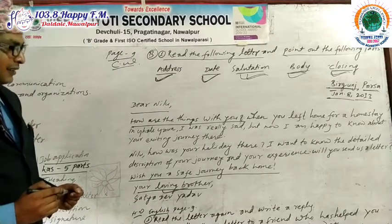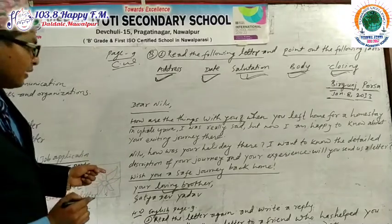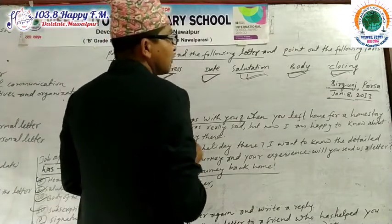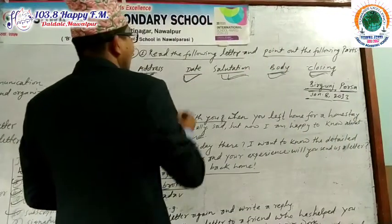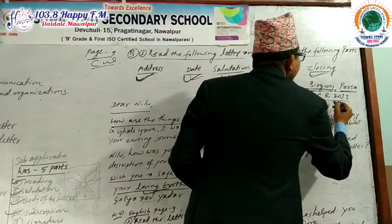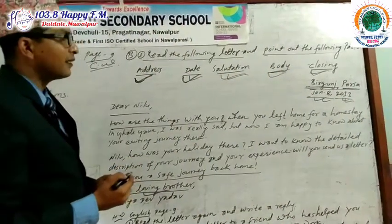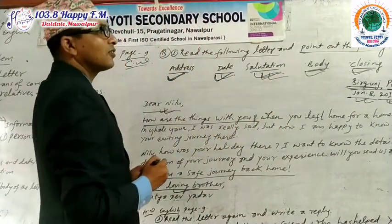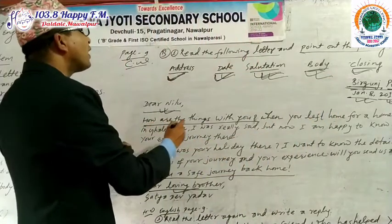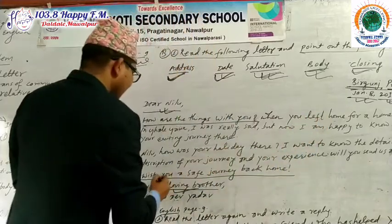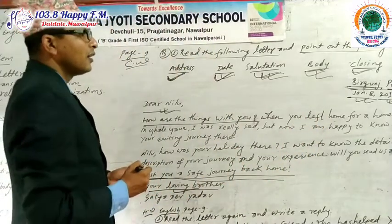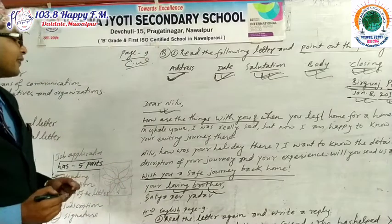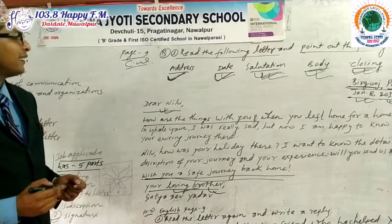What is the closing? The closing is 'Your loving brother.' Once again: the address is Brigands; the date is January 8th, 2013; the salutation is 'Dear Nilu'; the body is 'How are the things with you' through to the end of the main content; and the closing is 'Your loving brother, Satya Dev.'